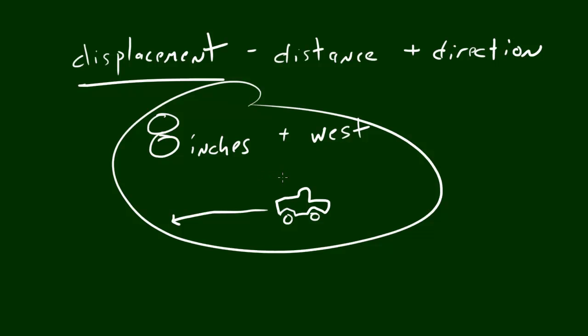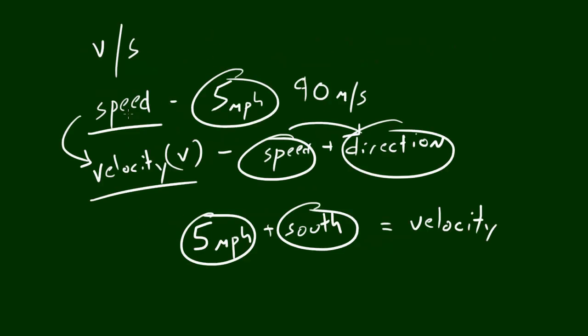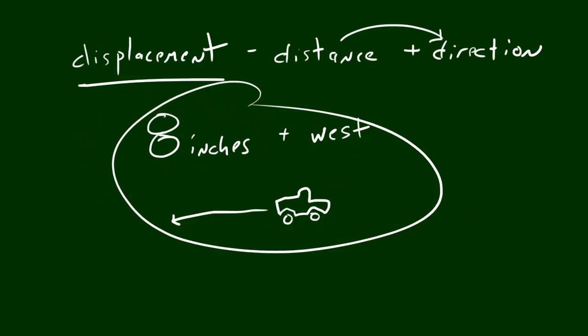So again, distance and displacement are related, but displacement is basically distance with a direction, similar to the idea that whenever we were talking about velocity and speed, velocity is speed with a direction. So basically, these terms are just the old terms plus a direction. Now, that's easy enough to understand, but physicists had to make things a little more complicated.